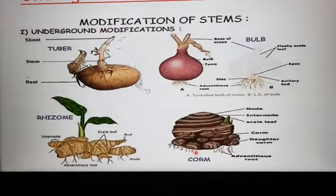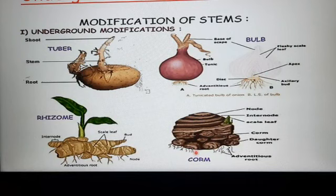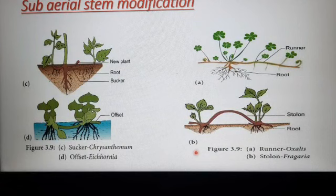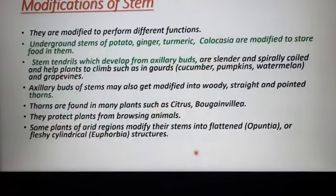Tuber, bulb, rhizome, and corm are examples of underground stem modifications because they are underground. Sub-aerial stem modifications — they are half in the soil and half in the aerial part — so they are sub-aerial stem modifications. Examples are sucker, runner, stolon, and offset. So, this is the modification of stem.